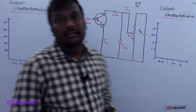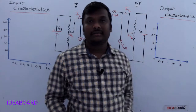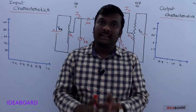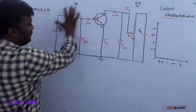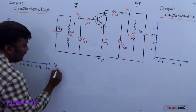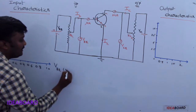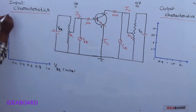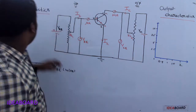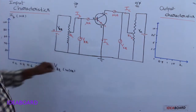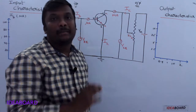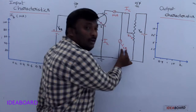Now let us see input characteristics and output characteristics. Input characteristics means drawing a graph between input voltage and input current. In the input portion, the input voltage is VBE — take VBE along the X-axis measured in volts, and IB along the Y-axis measured in microamperes. While explaining input characteristics, always keep in mind that VCE remains constant.